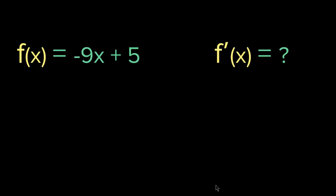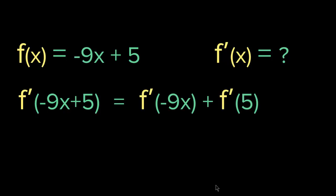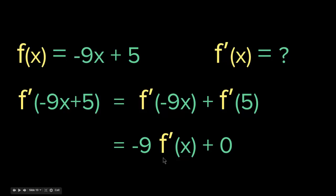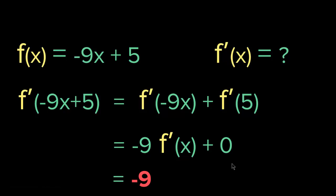Let's look at a negative example. Let's say we have f(x) = -9x + 5. What is the derivative of that? All you have to do is take the derivative of each: the derivative of -9x and the derivative of 5, then sum them. So it is f'(-9x) + f'(5), which is -9 times f'(x) plus 0. The derivative of the constant 5 is 0, so eventually you get -9. The derivative of f(x) = -9x + 5 is just -9.